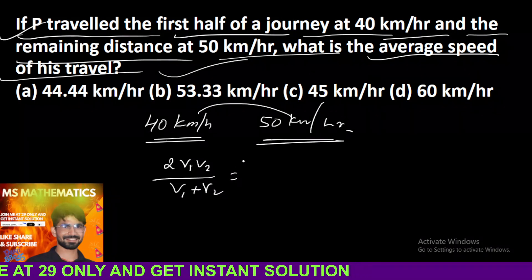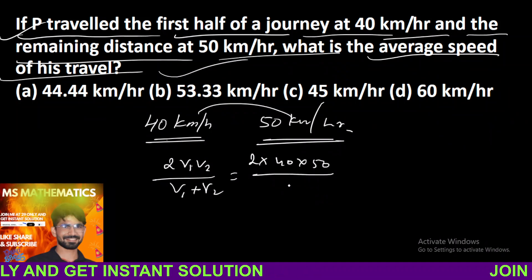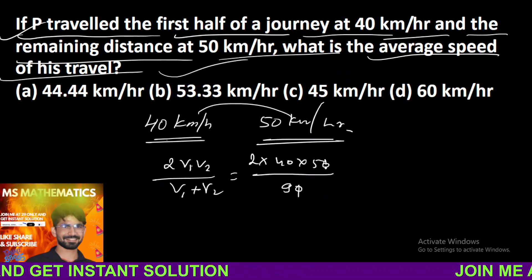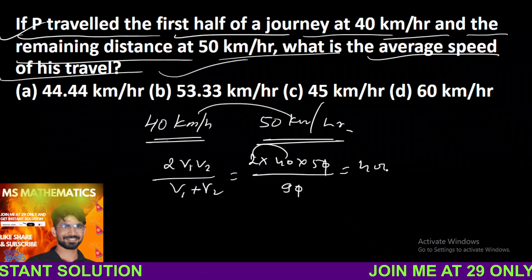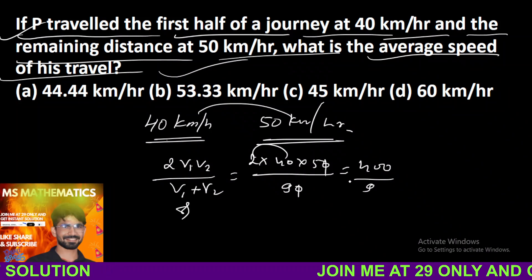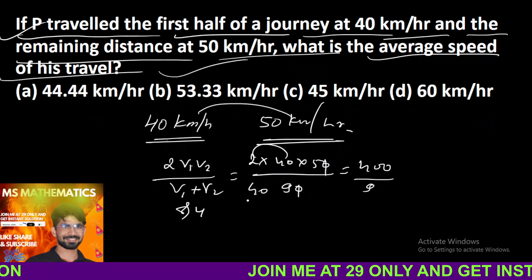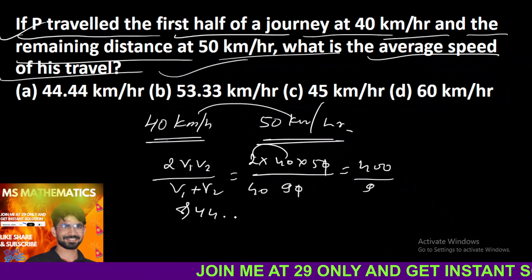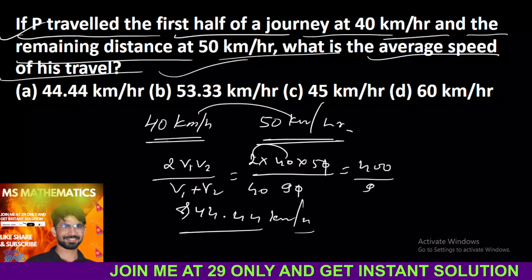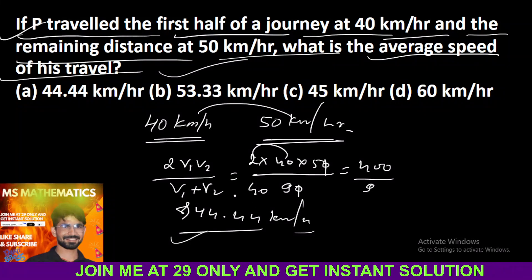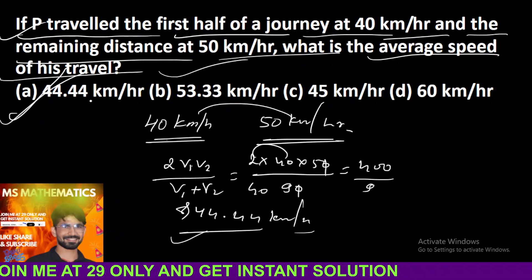तो यहाँ पर average speed का मतलब: 2 into 40 into 50 upon 40 plus 50, यानि की 90. 10 से cancel हो गया और multiplication करते है: 4 × 100 = 400. 400 को 9 से भाग लगाते है, तो answer आएगा 44.44 km per hour. तो finally आपका answer option number A correct हो जाएगा।